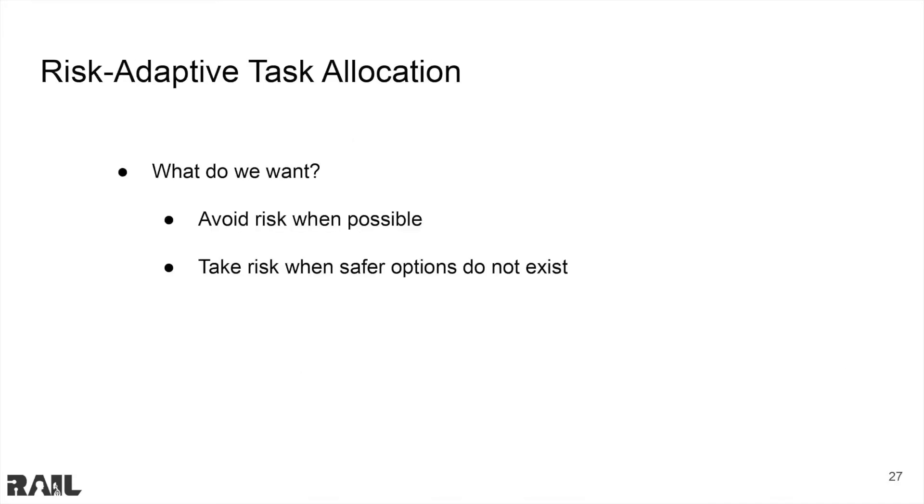With our method, and much like the bird study, we want to avoid risk when possible, but take risk when safer options do not exist. To do this, we want to find an assignment matrix that maximizes the probability of satisfying the task requirements.